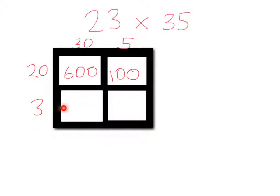Next coming from here we have 3 multiplied by 30, or you can think of it as 3 times 3, which is 9. And then just the 1 zero to be added. And then in our final box, 3 multiplied by 5, which is 15.